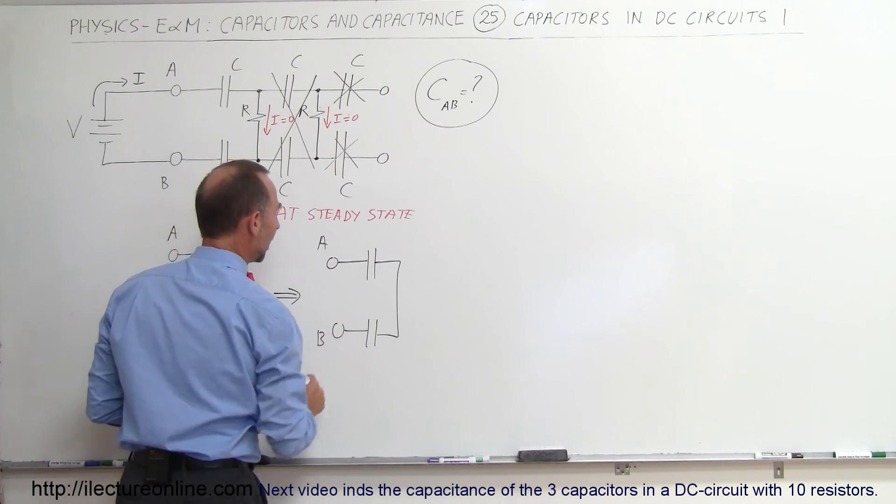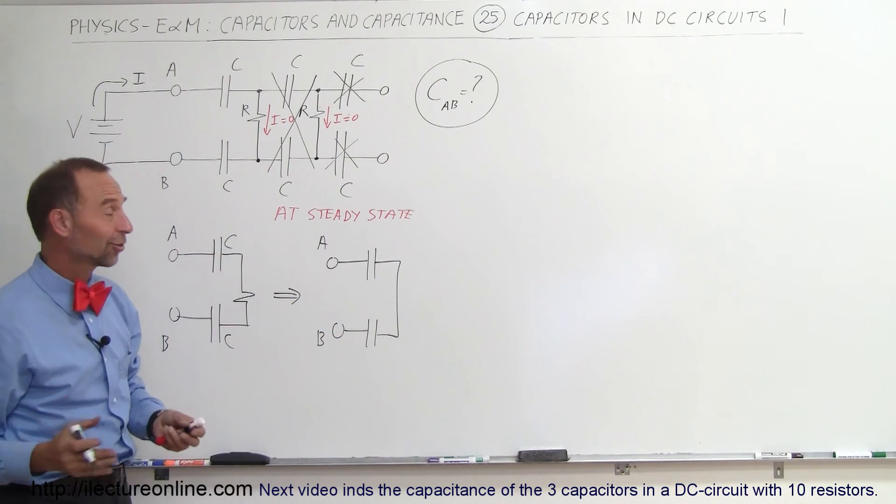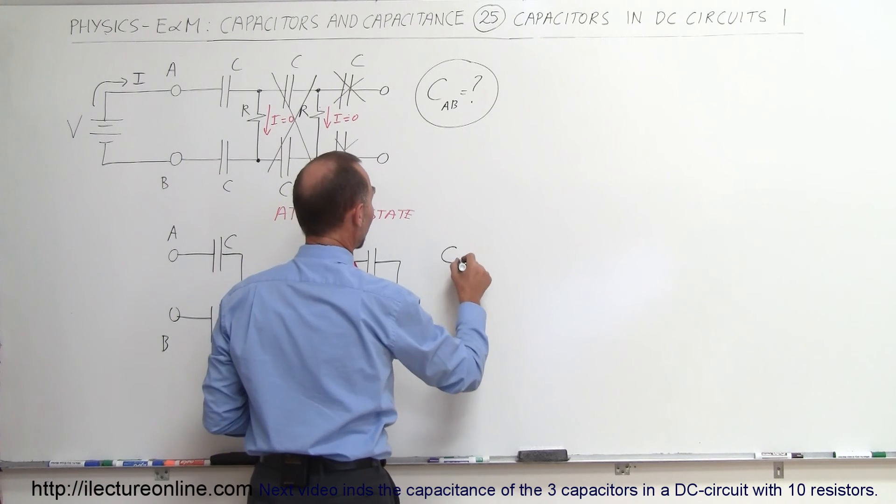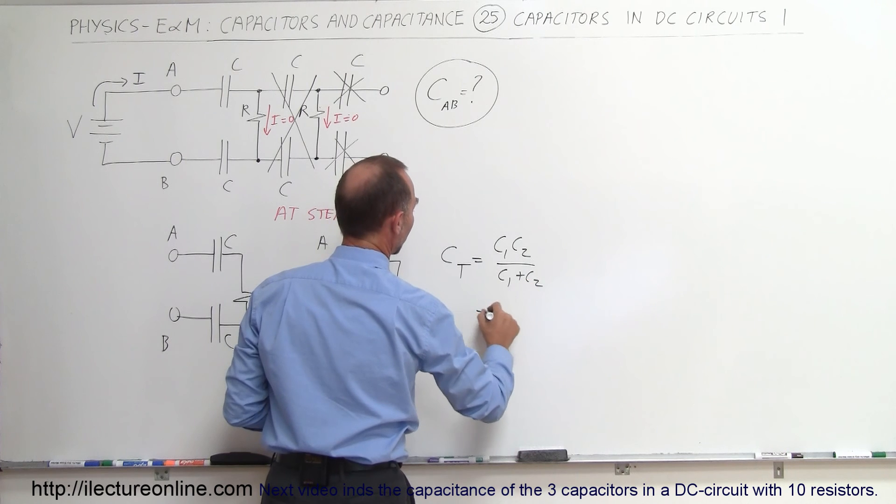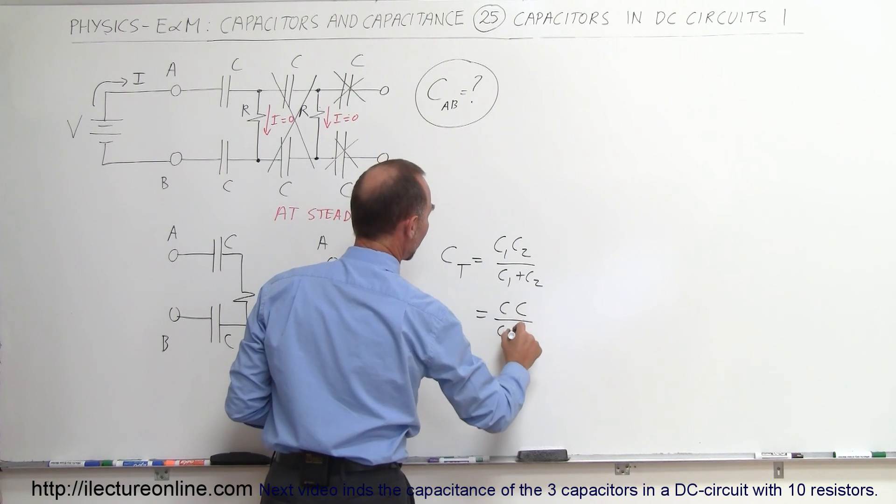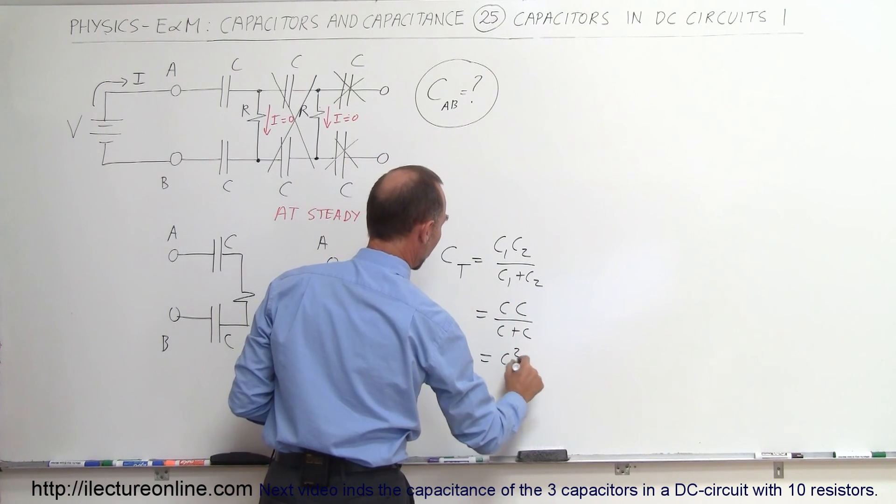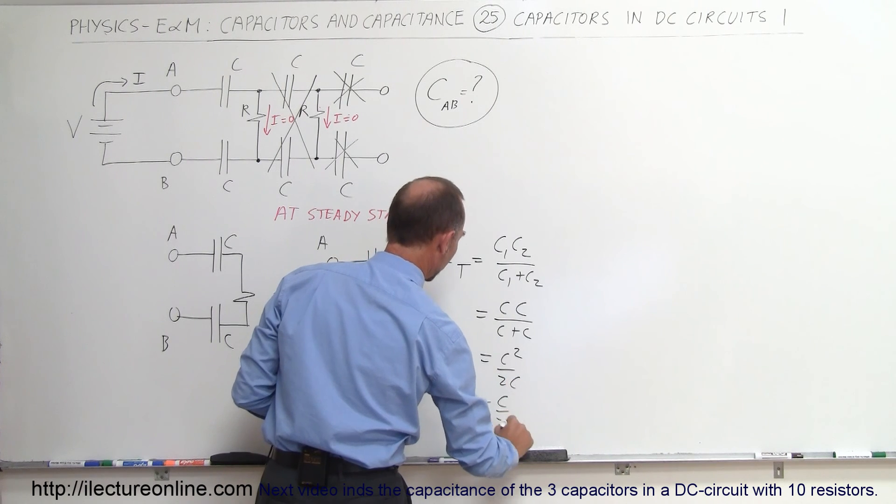This is A, this is B, and of course, two capacitors connected in series, we know that the total capacitance is equal to the product over the sum, and so it would be C times C over C plus C, or C squared over 2C, or C divided by 2.